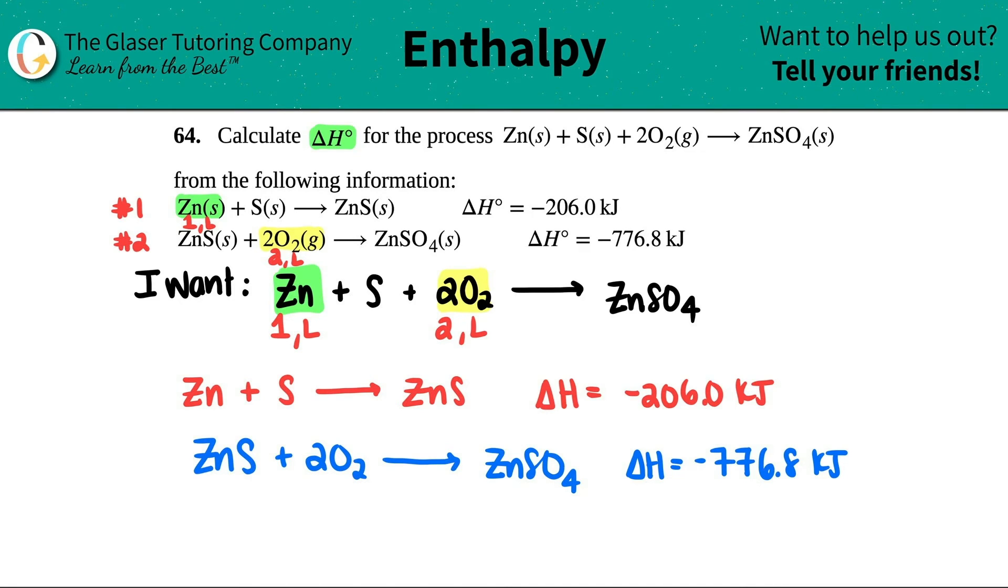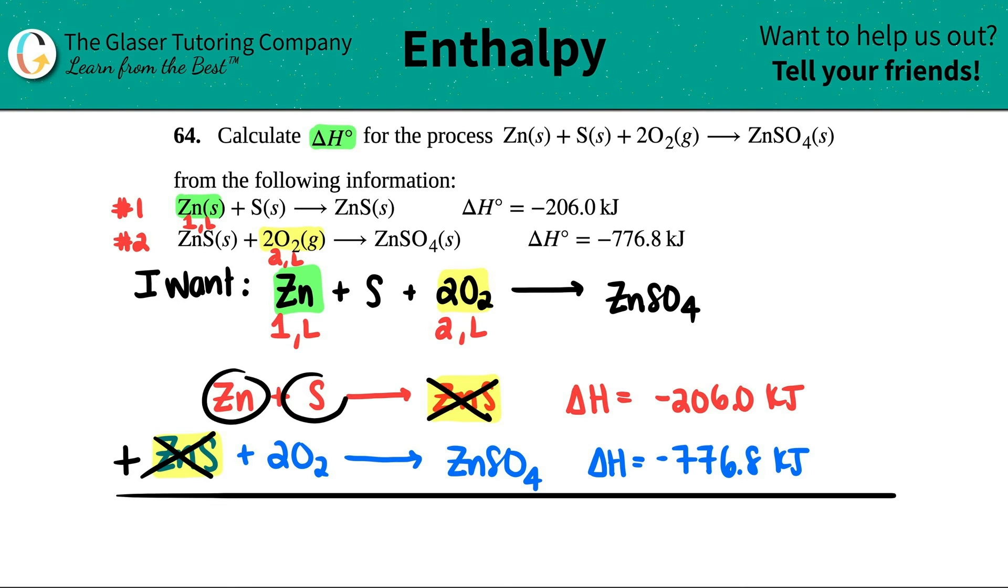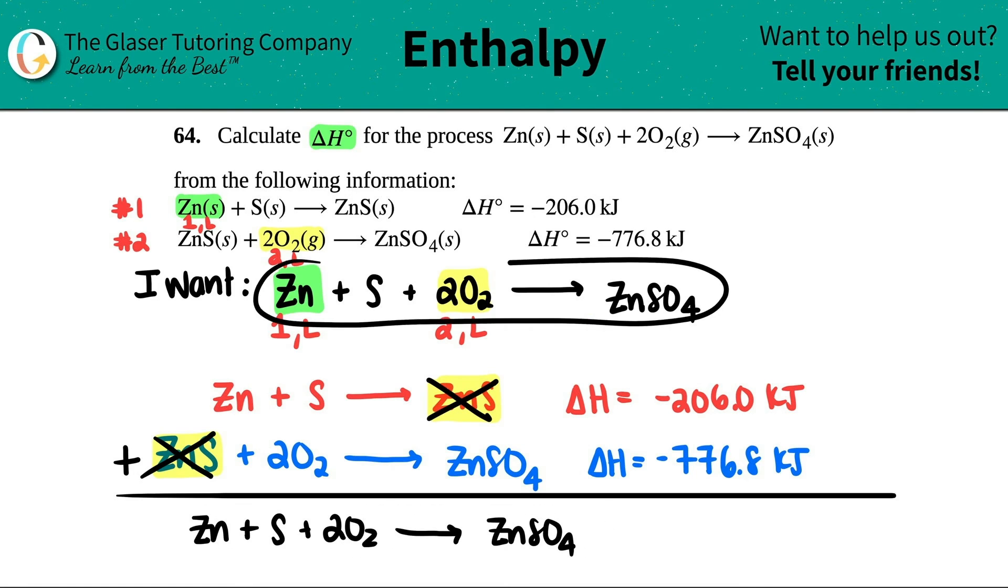So what we're going to do now is basically just checking. I'm going to add these two equations together. Cancel out like compounds that are on opposite sides. For example, I see that I have a Zn S on the right-hand side here and a Zn S on the left-hand side here. Things that are on opposite sides, they cancel. So now I have Zn plus S plus two O2 yields Zn SO4. And look, this is the equation that I wanted. So I know I did it correctly.